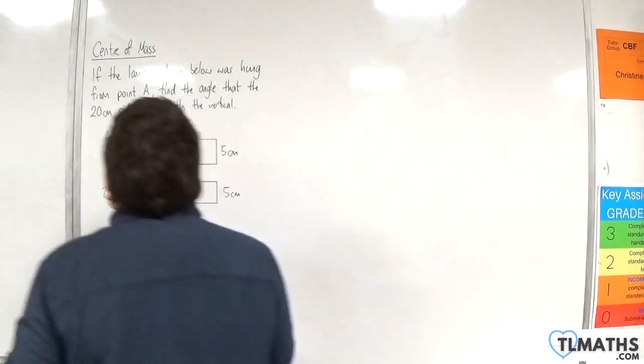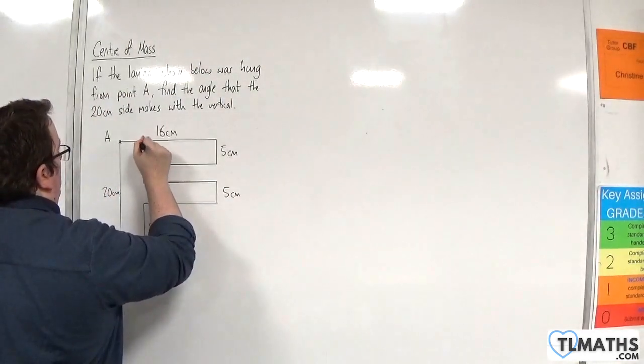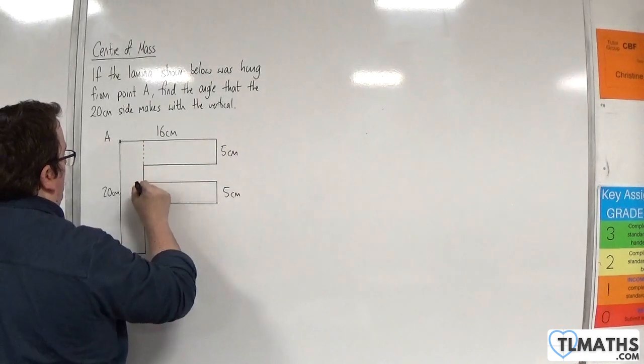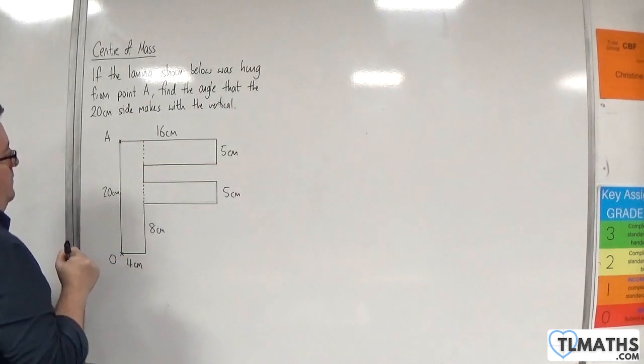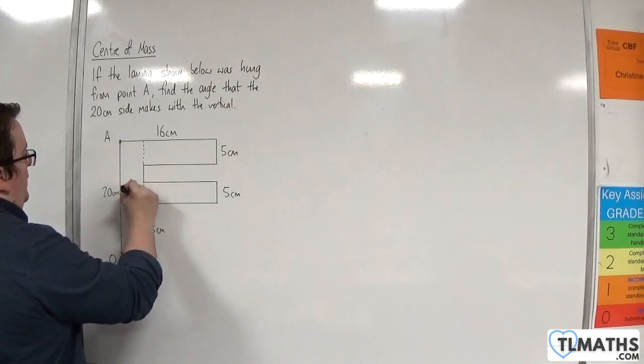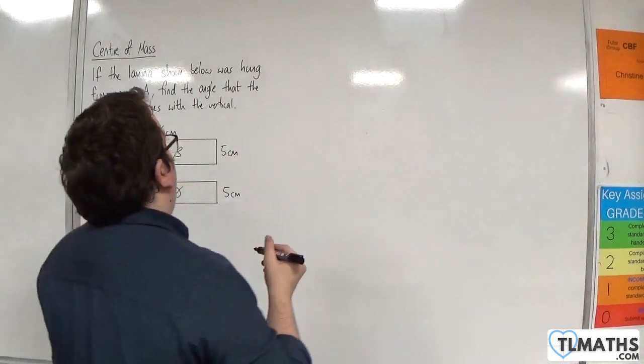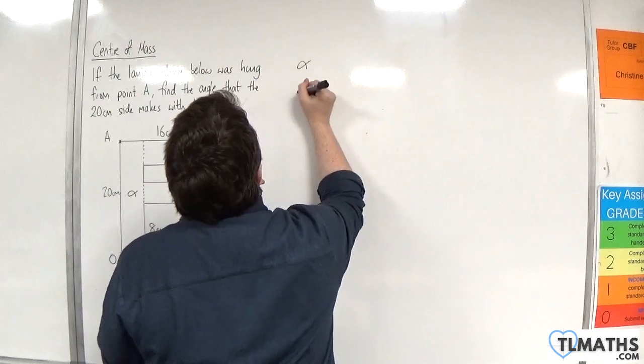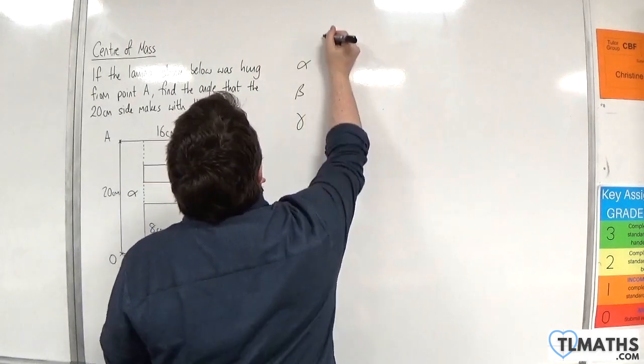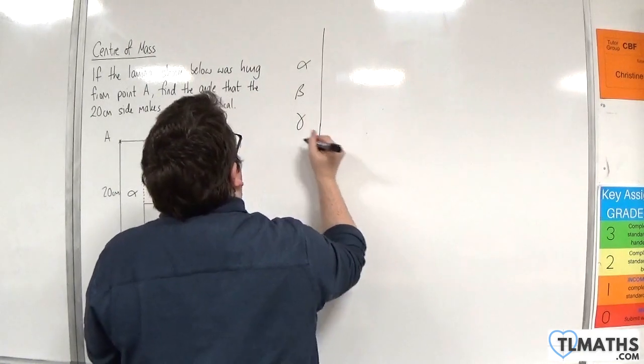I'm going to split it up into these sections here. So let's have this as alpha, beta, and gamma.